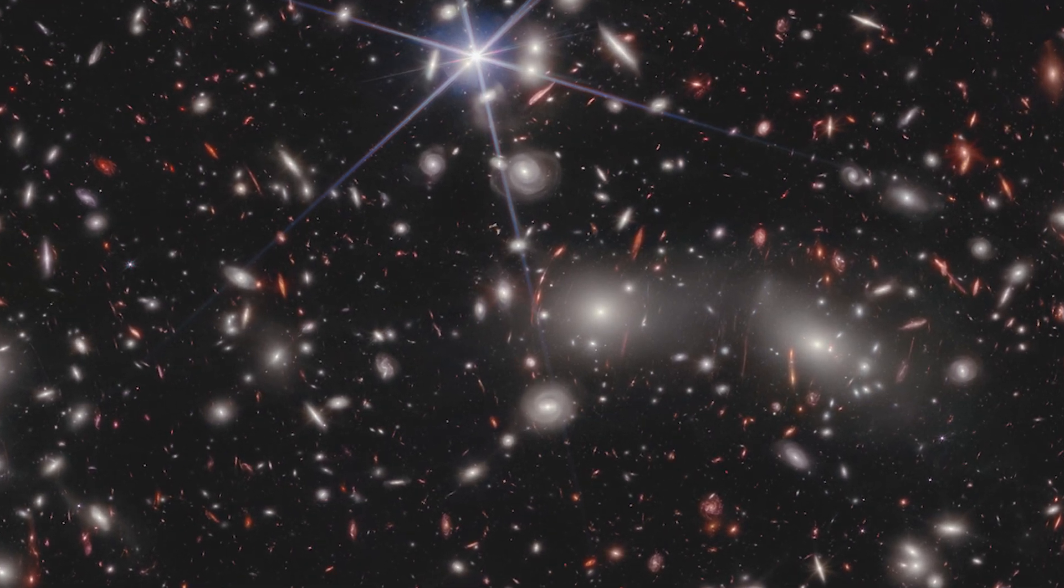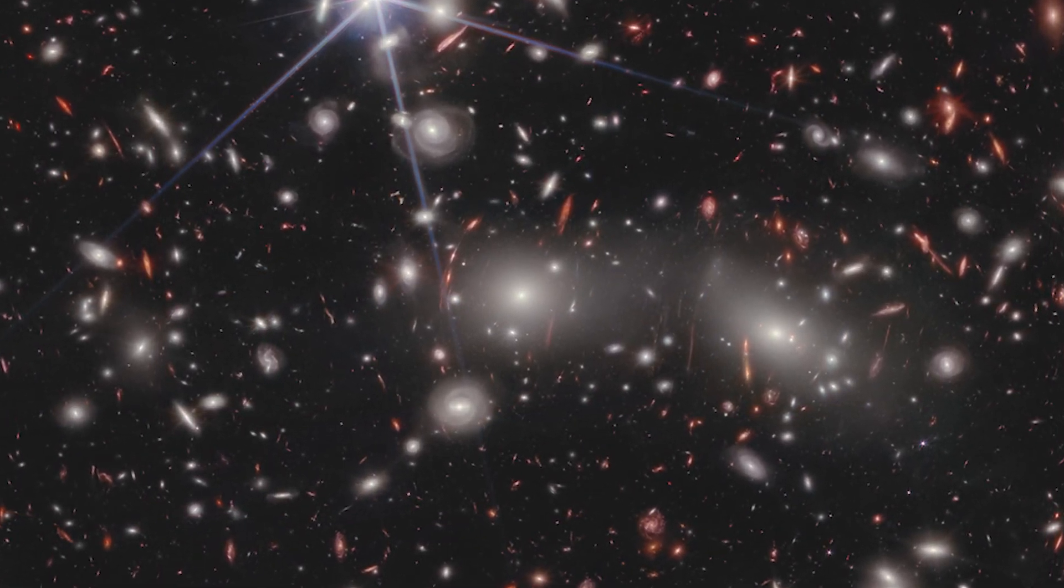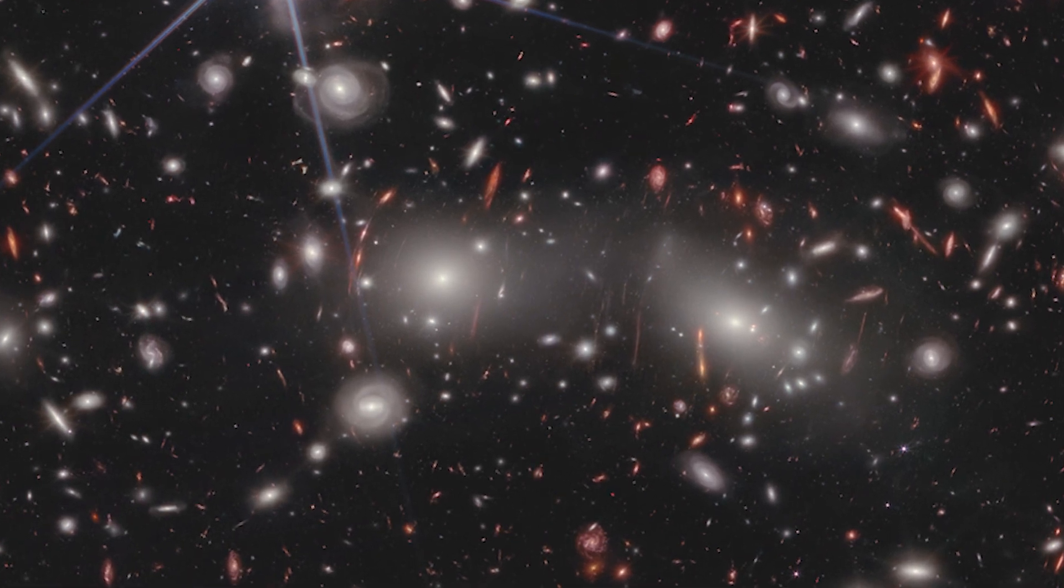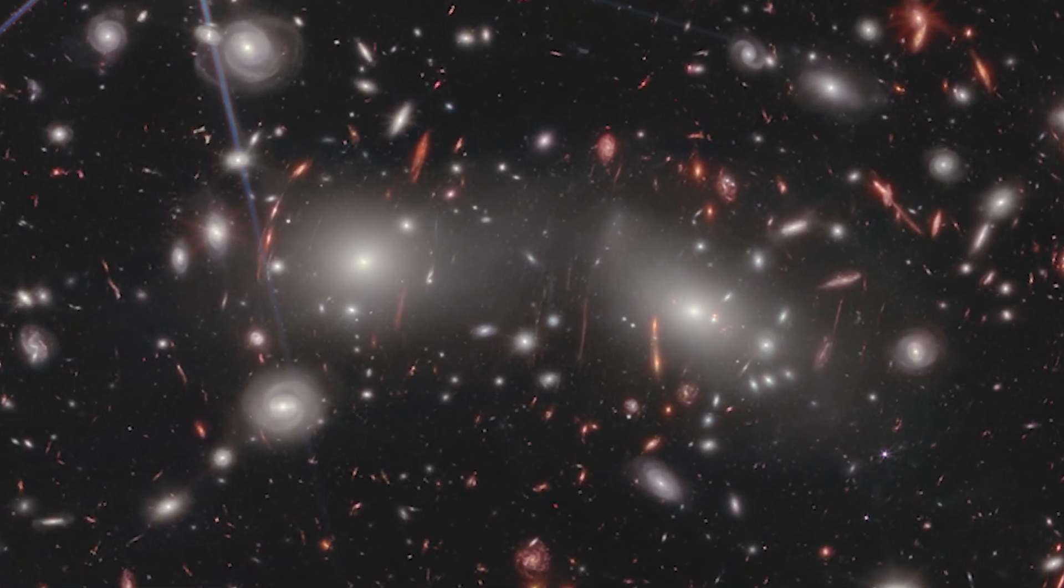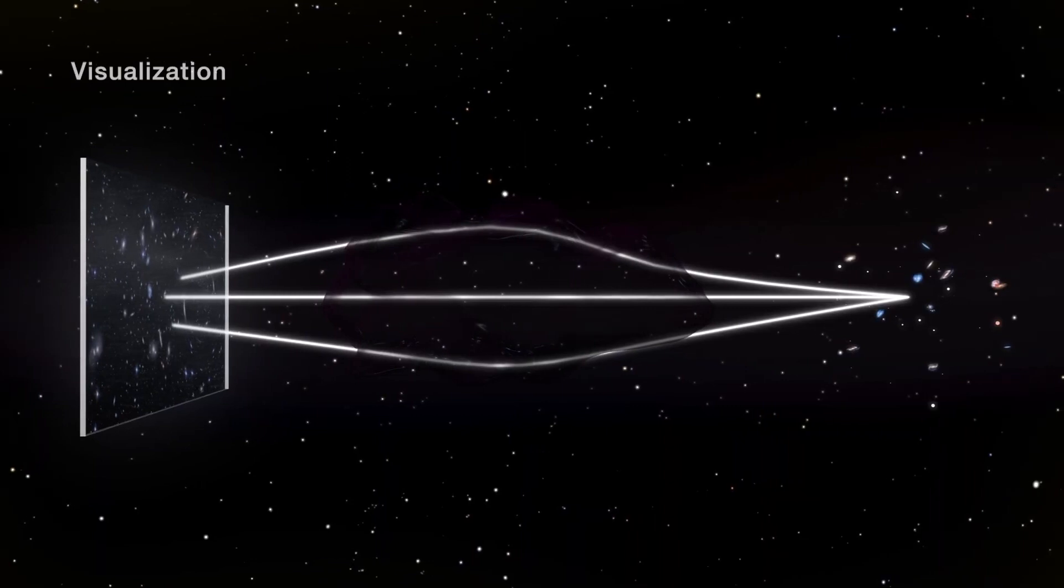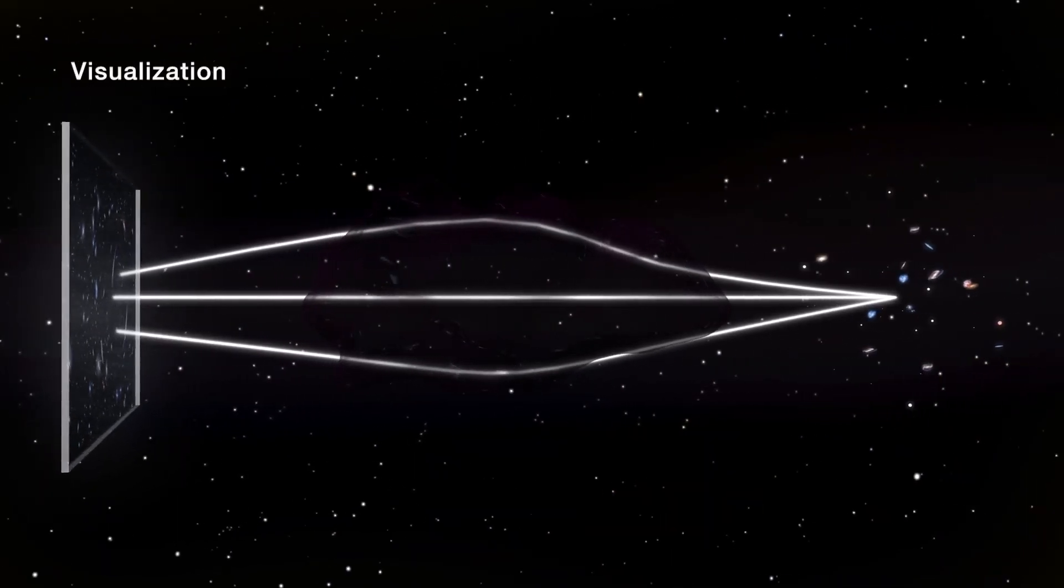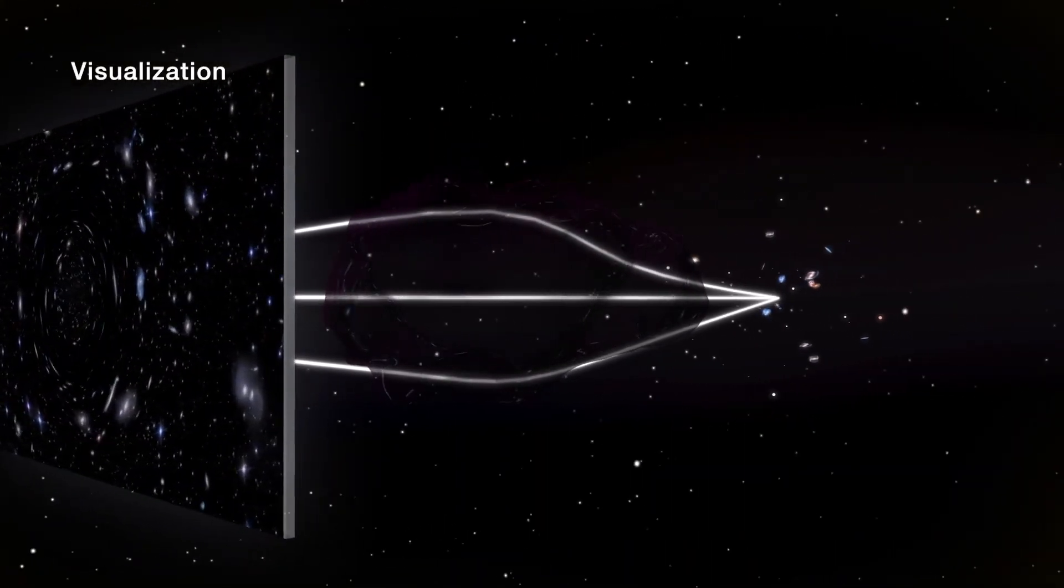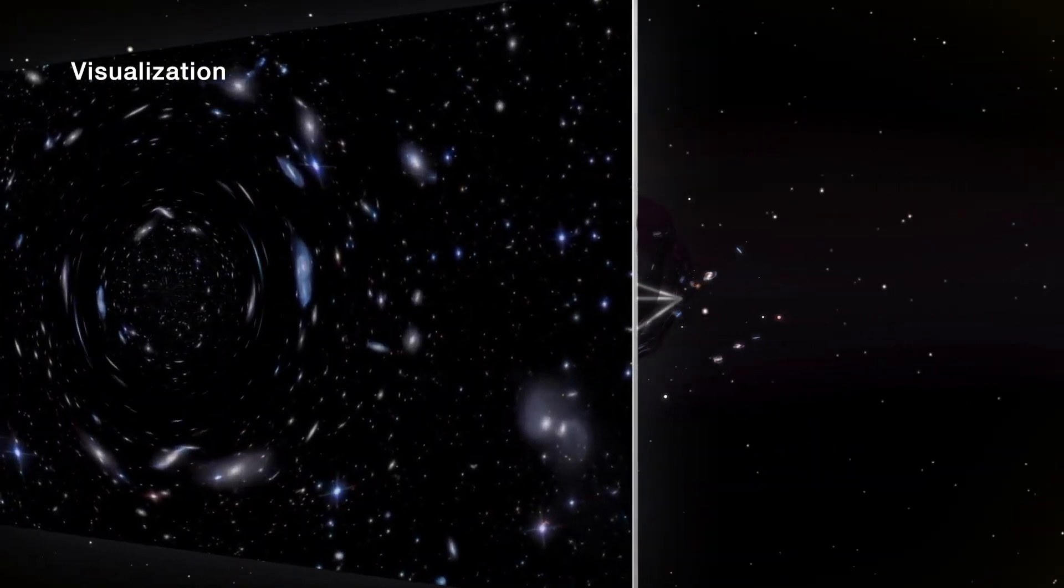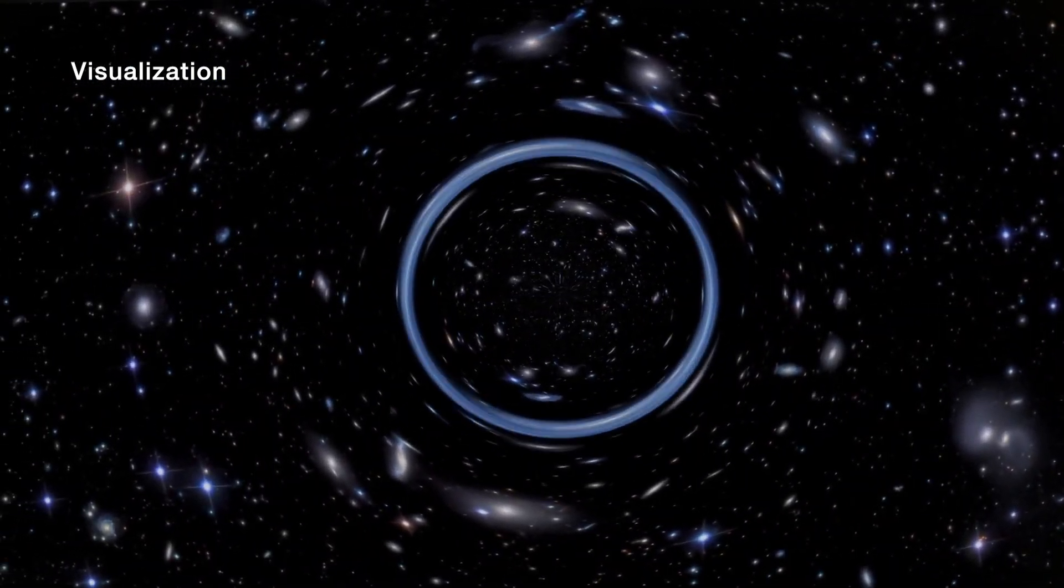One of the most intriguing aspects of Pandora's Cluster is the gravitational lensing effect predicted by Einstein's theory of general relativity. This phenomenon is caused by massive objects in the foreground of our view, such as galaxies or clusters of galaxies, that warp the fabric of space and time around them.